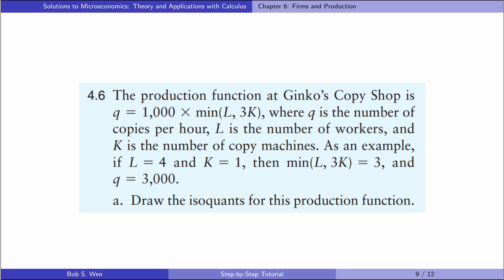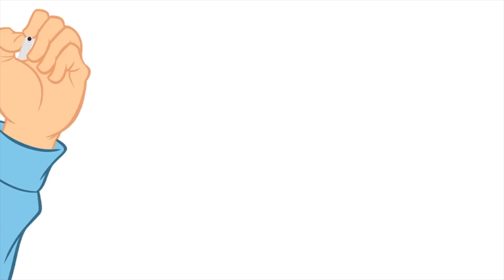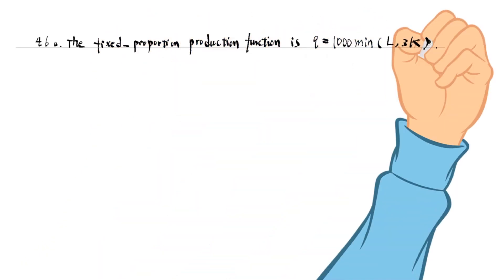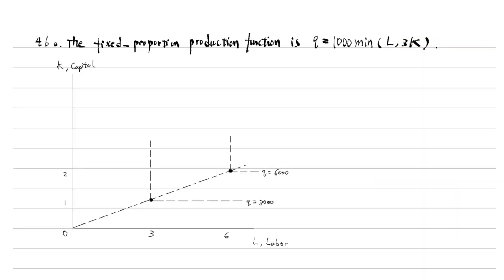Let's solve exercise 4.6. The production function at the copy shop is Q = 1,000 × min(L, 3K), where Q is the number of copies per hour, L is the number of workers, and K is the number of copy machines. In part A, draw the isoquants for this production function. The isoquants are right angles if we include inefficient production processes. The efficient points of production are the dots along the dotted straight line, where the firm uses labour and capital in a fixed proportion of 3 to 1.